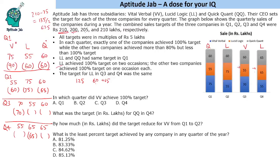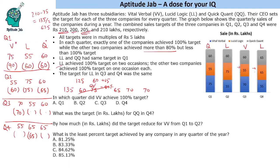For Q3: LL's target is 70 (100% achieved). The remaining 135 must be split between VV (sales 70) and QQ (sales 60). A split of 60 and 75 would make QQ's achievement exactly 80%, violating the 'more than 80%' condition. The next option, 65 and 70: 70 out of 70 would be 100% for VV, but VV achieves 100% only once. So the valid split is VV target = 65, QQ target = 70. We are done with Q3.